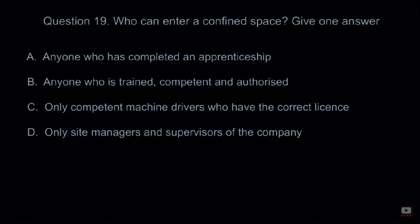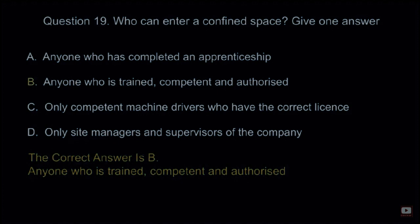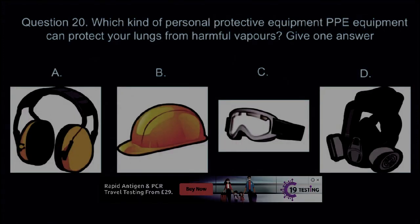Question 19: Who can enter a confined space? Give one answer. A: Anyone who has completed an apprenticeship. B: Anyone who is trained, competent, and authorized. C: Only competent machine drivers who have the correct license. D: Only site managers and supervisors of the company. The correct answer is B: Anyone who is trained, competent, and authorized.